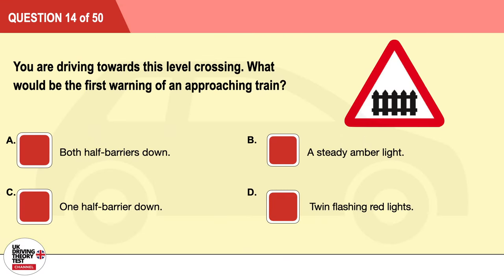Question 14: You are driving towards this level crossing. What would be the first warning of an approaching train? A: Both half barriers down. B: A steady amber light. C: One half barrier down. D: Twin flashing red lights. The correct answer is B: a steady amber light.